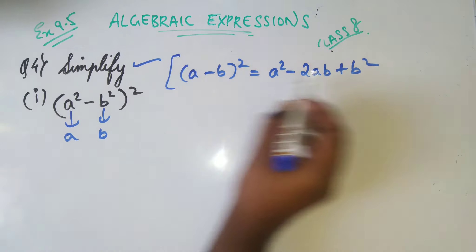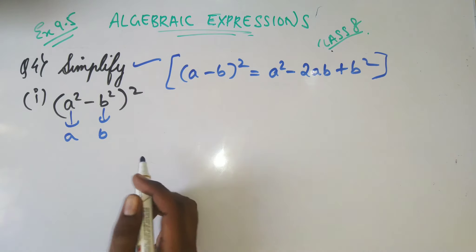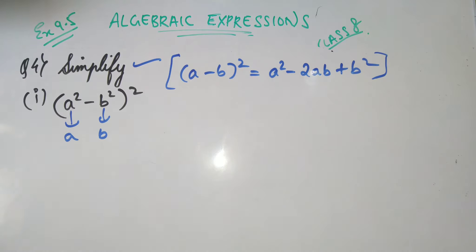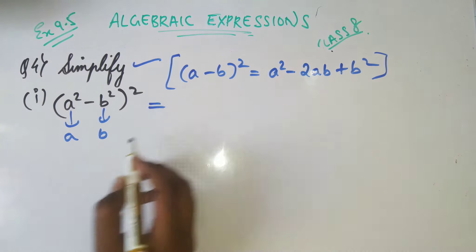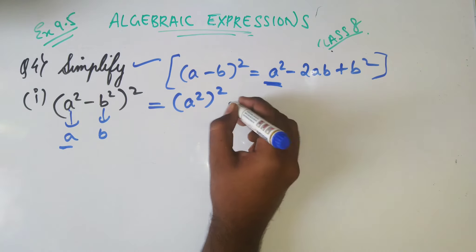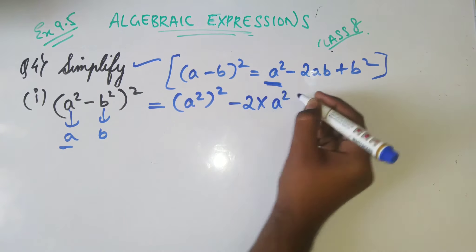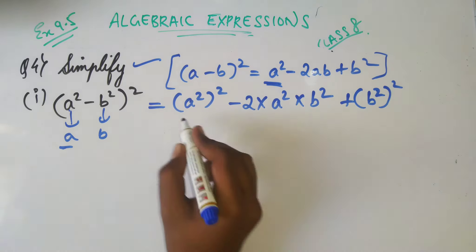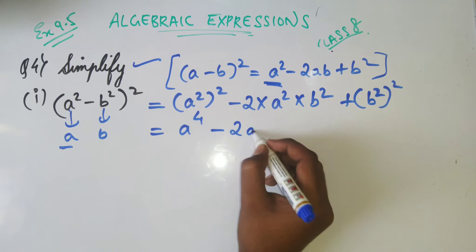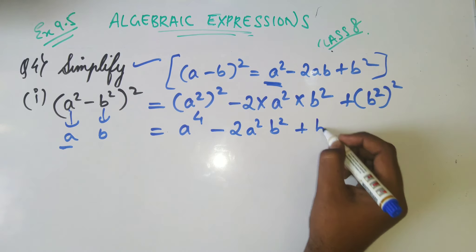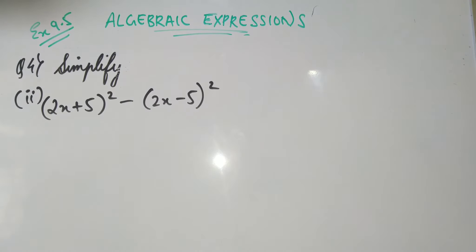Write the identity beside each step — that is the most important thing, so you get an idea what formula to apply and where. Now, here: a is a², b is b². So it becomes (a²)² - 2·a²·b² + (b²)². The final answer is a⁴ - 2a²b² + b⁴.